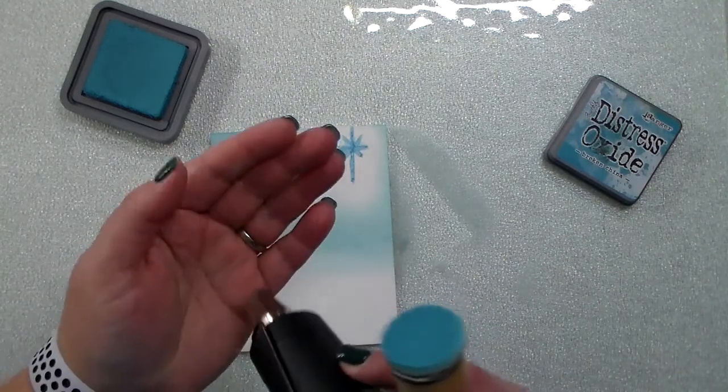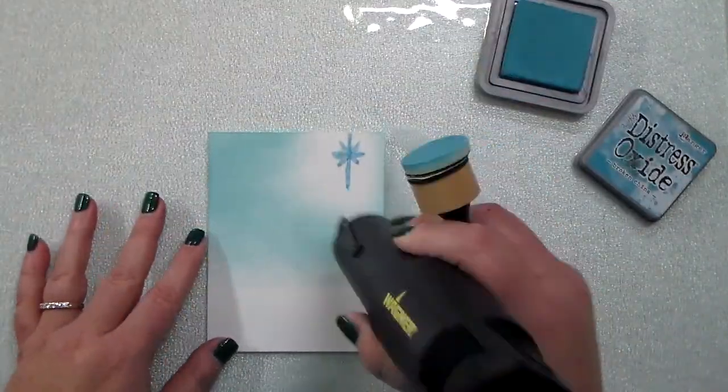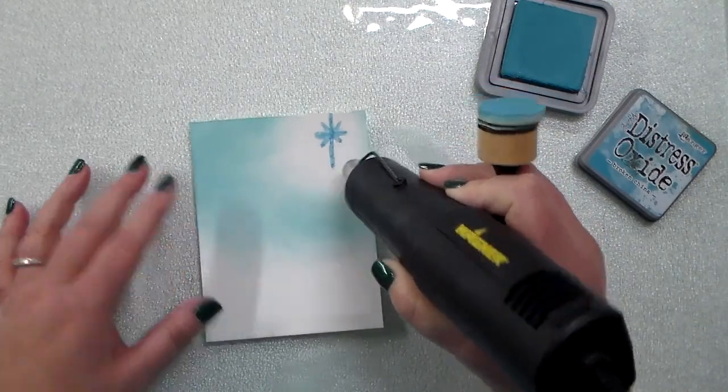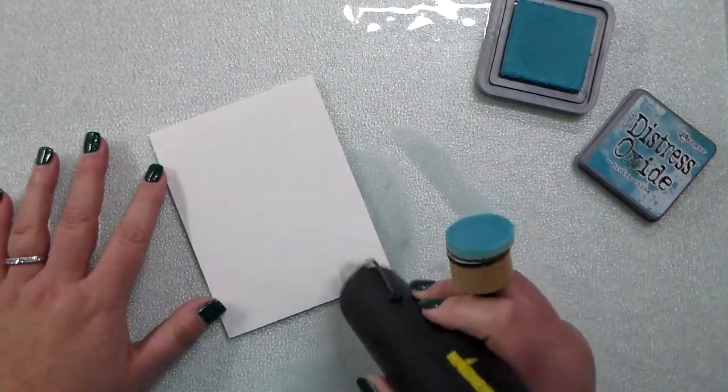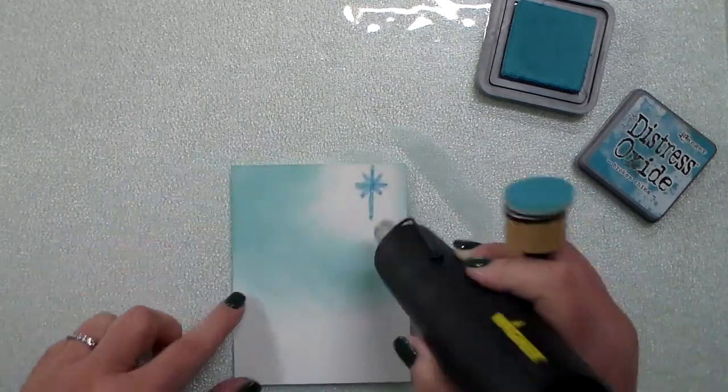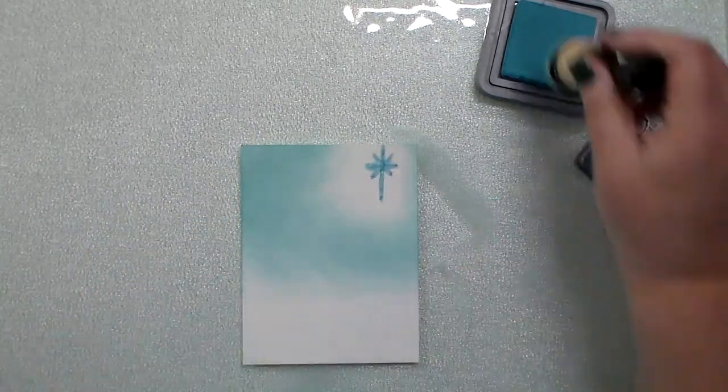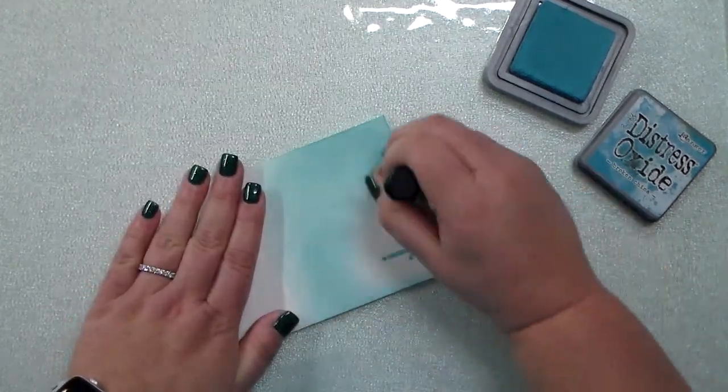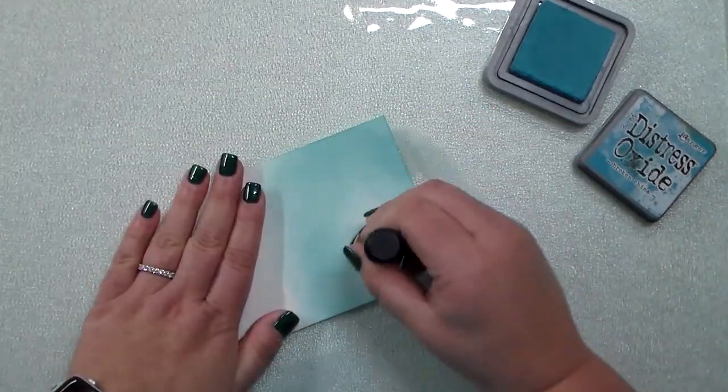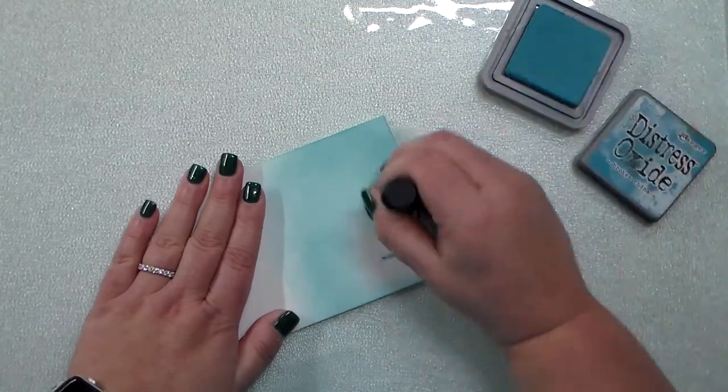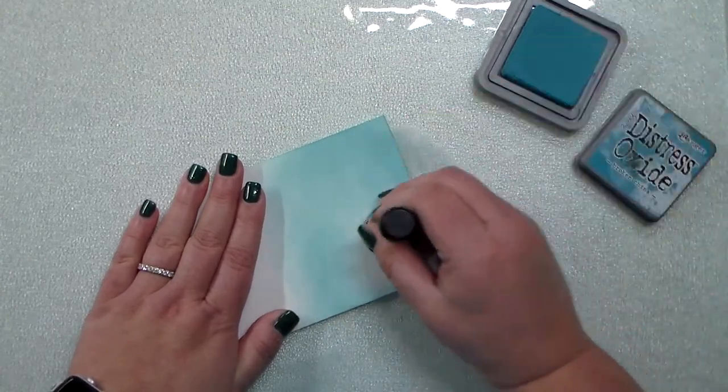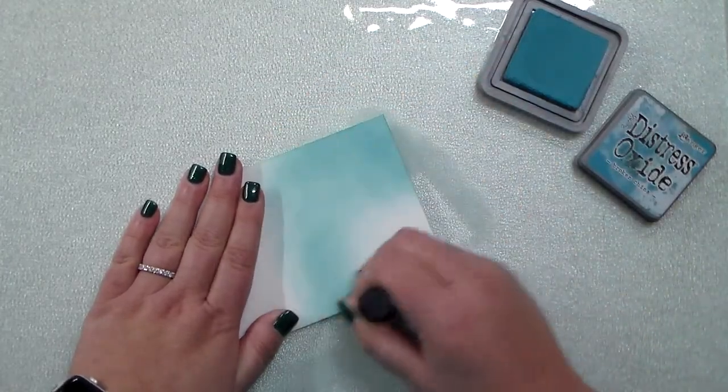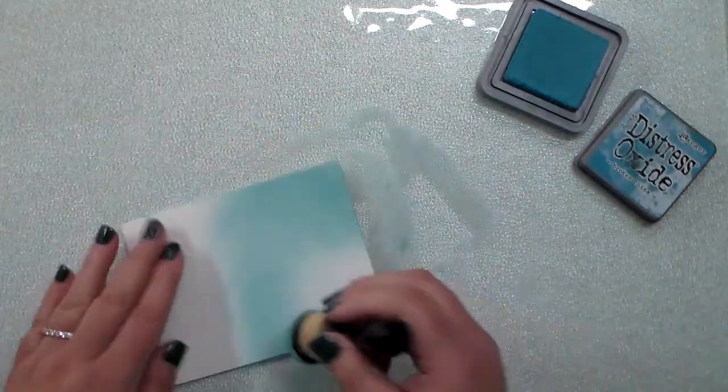So I did mask off a little Christmas star there at the top and I'm using some broken china distress oxide to do a sky area. I left the bottom of that cardstock white because it's going to be a snowy winter scene. I am just layering on, not being too careful to get that just right, because I'm going to spritz it with water so it looks a little snowy.